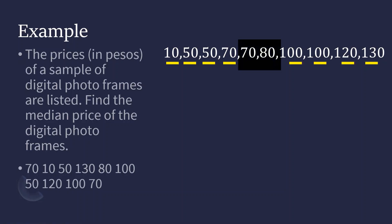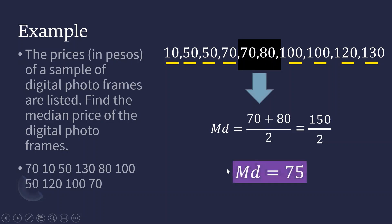The median values here are 70 and 80. All we need to do is find the mean of the two middle values. That is 70 plus 80 divided by 2. 70 plus 80 is 150 divided by 2. Therefore, the median is 75.